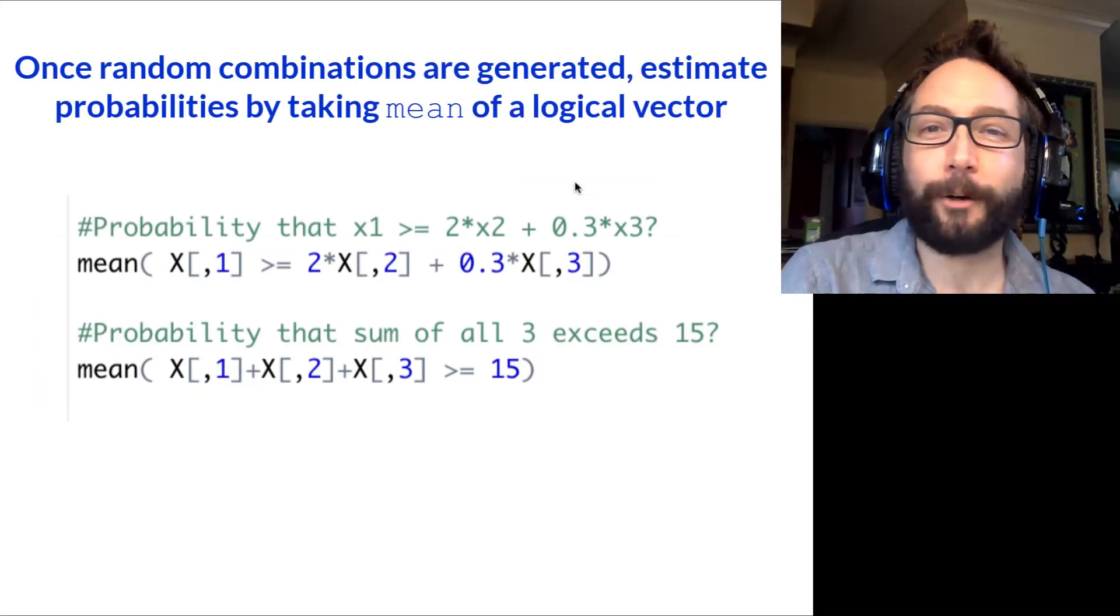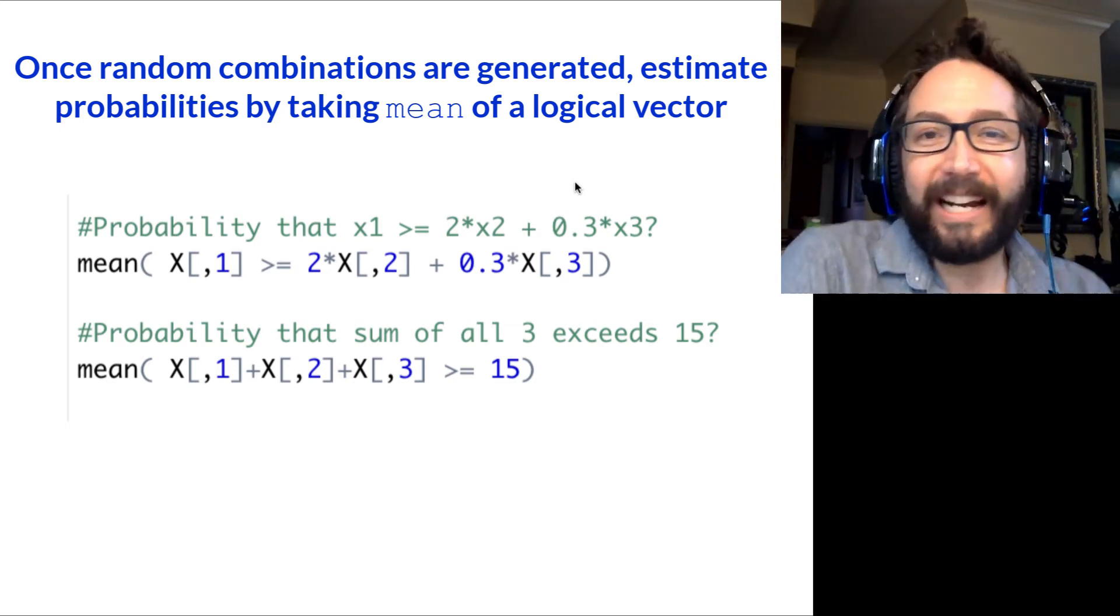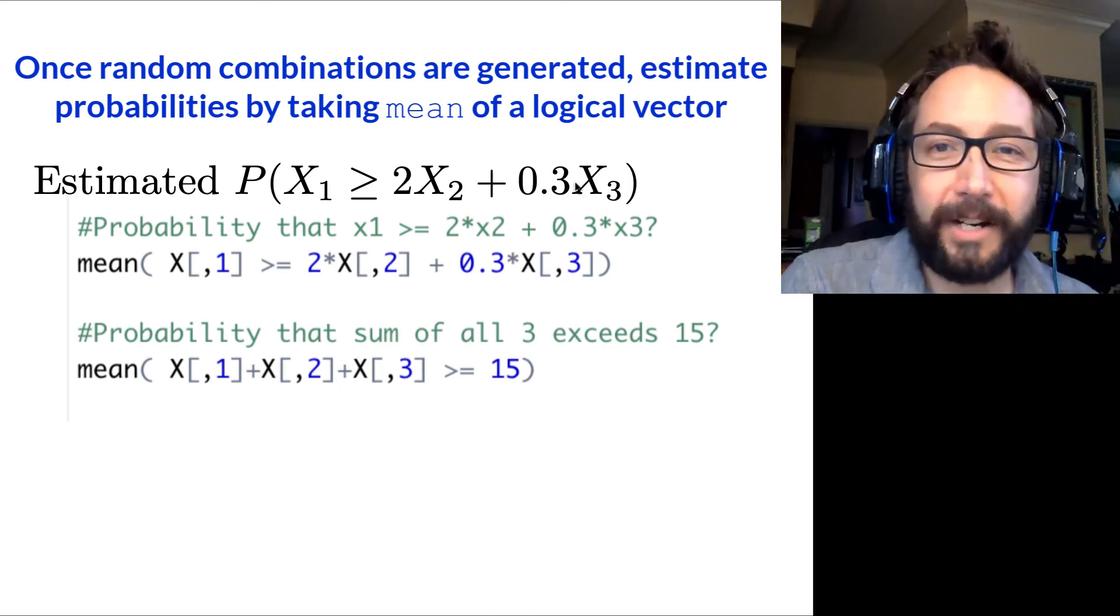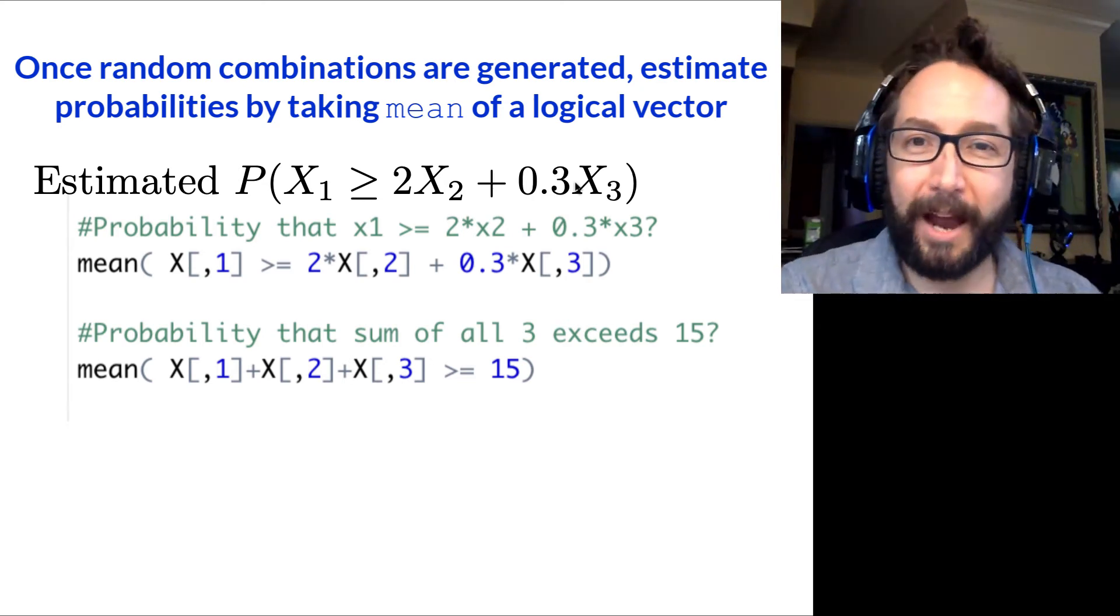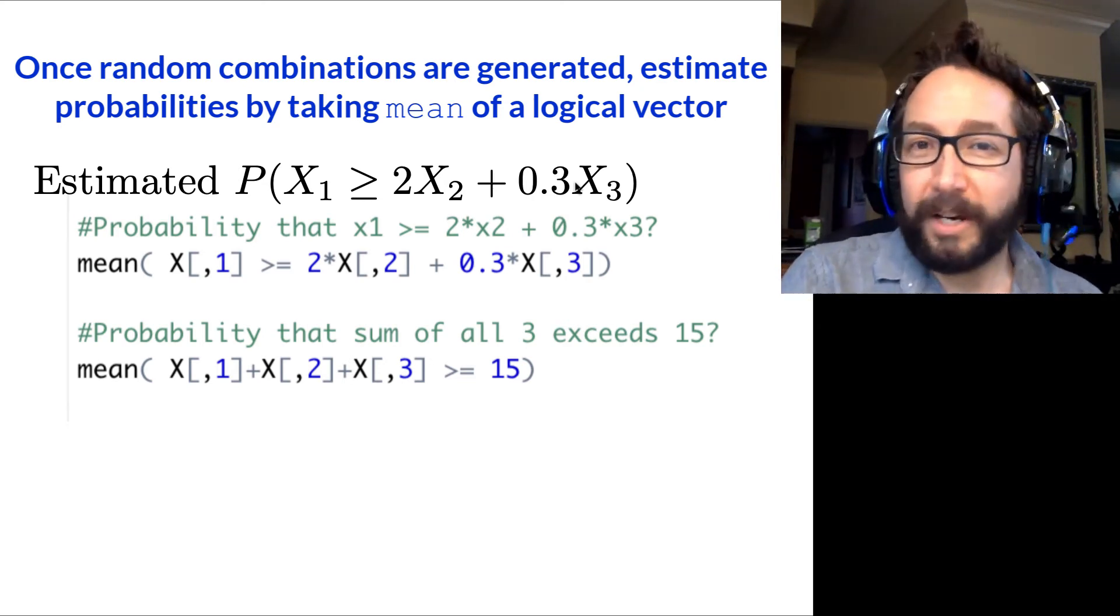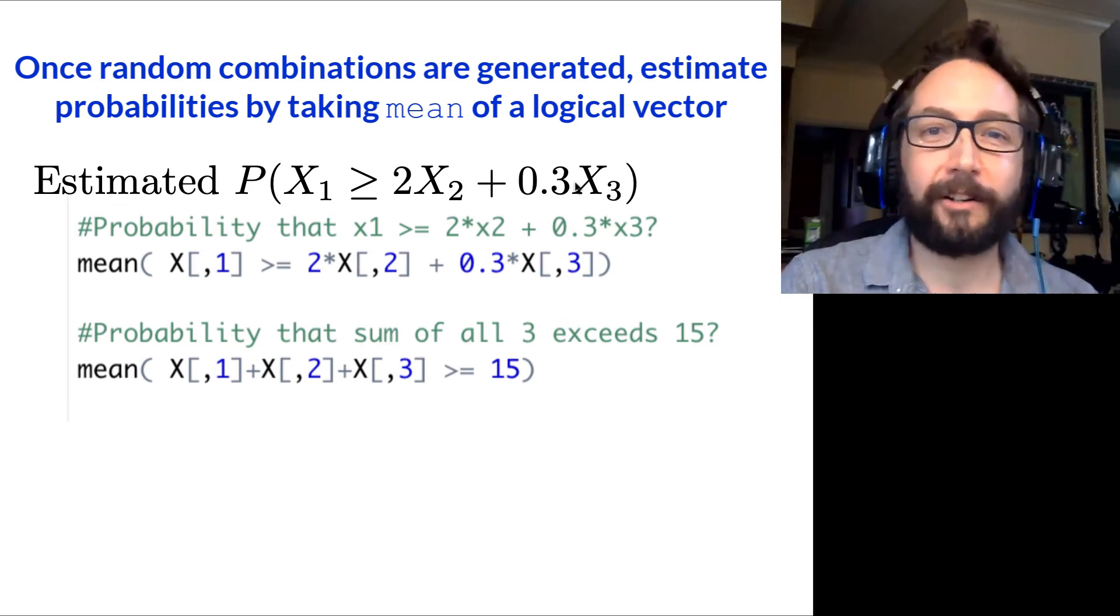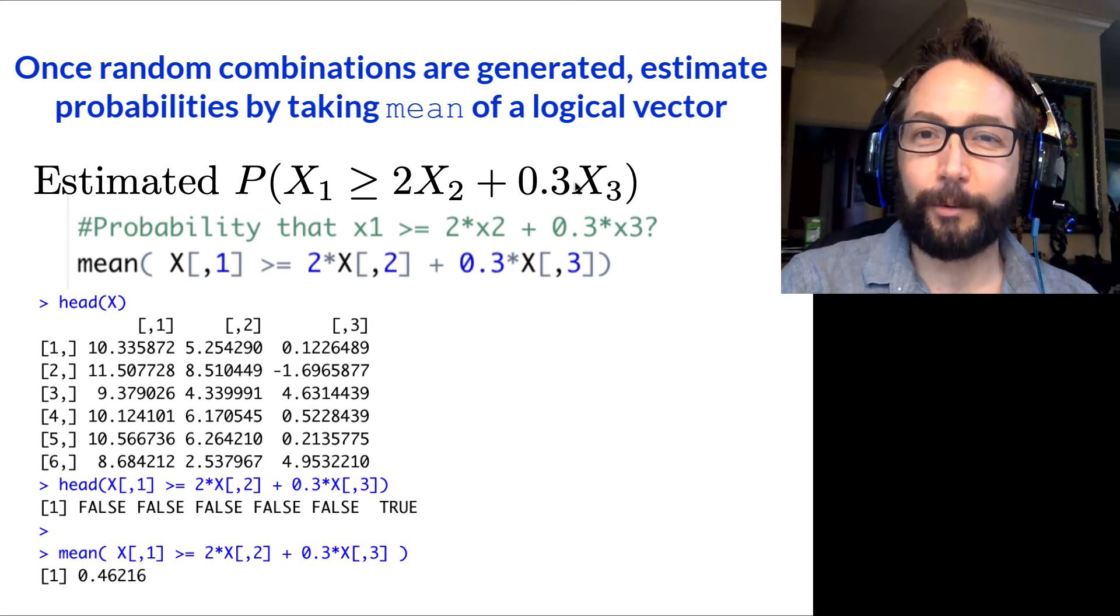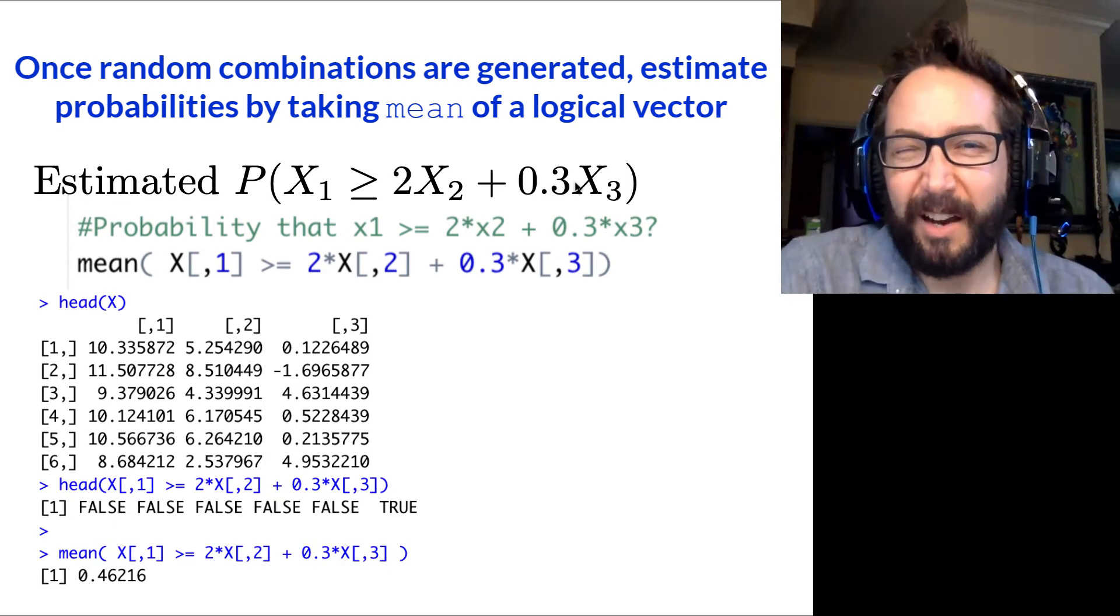And once we have that, once we have a big old matrix x that contains our combinations of randomly generated multivariate random normal numbers, we can ask questions like, what's the probability that x1 is at least as big as 2x2 plus 0.3 times x3? We can write that as a mean of a logical condition, just like what we did back when we were learning about Monte Carlo simulations. We can put in that logical condition that describes our event of interest, so the first column of x being greater than or equal to 2 times that second column of x plus 0.3 times the third column of x, and ask for the average of that logical vector. True is 1, false is 0, so the mean of that logical vector will be the proportion of elements that were true, basically the fraction of random numbers that satisfy our event of interest, a good estimate of that probability.